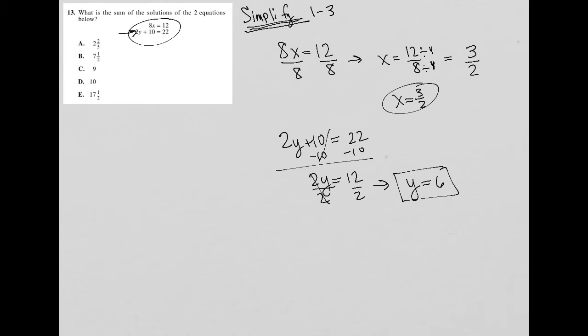So now when I go back to the question and see what am I being asked to find, the question says, what is the sum of the solutions? Okay. Well, I have a solution that is 3 halves. I have another solution that is 6. So the sum just means to add those together.